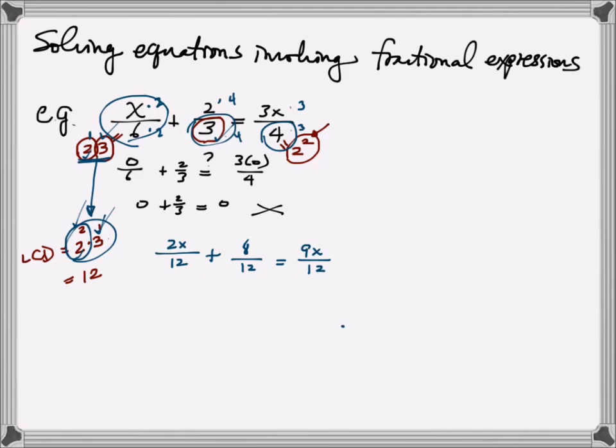Now you notice that every single fraction has the same denominator, so I can just add the top portions and set them equal. On the left-hand side, I have 2x plus 8 on top. On the right-hand side, I have 9x on top. Because they're all over the same denominator, you can just ignore that. So really, I just have the equation 2x plus 8 equals 9x.